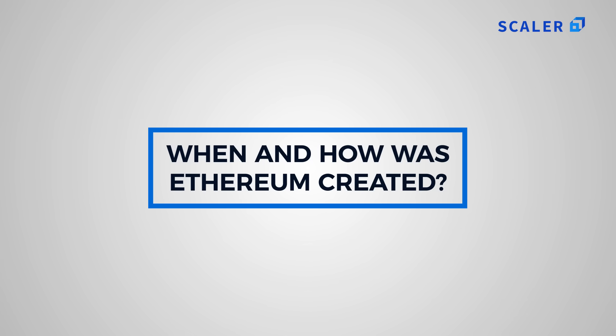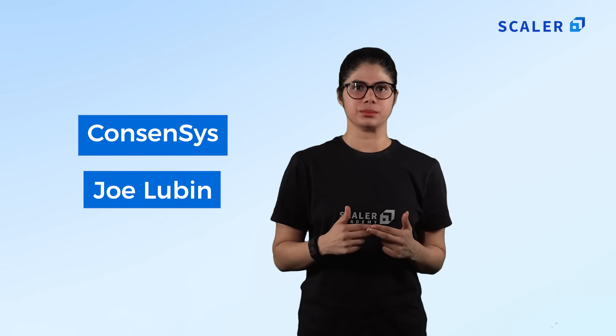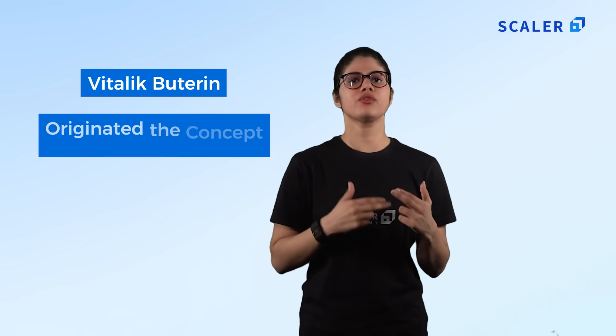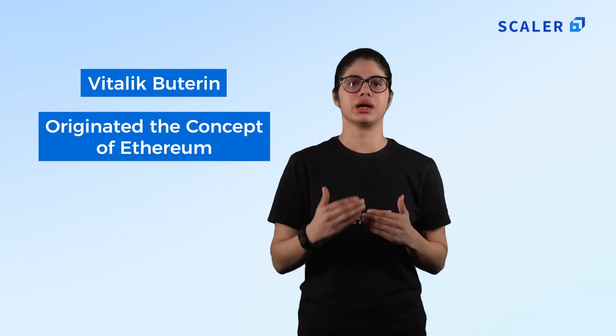When and how was Ethereum created? Ethereum was first launched in July 2015 by a group of blockchain enthusiasts. Joe Lubin, founder of ConsenSys and a blockchain applications developer, co-created Ethereum. Vitalik Buterin is the co-founder credited with originating the concept of Ethereum and is now the CEO and public face of the second most valued cryptocurrency. Born in 1994, Buterin is the youngest cryptocurrency billionaire globally. Ether was specially designed for the Ethereum platform and has been accepted as payment by many merchants and service vendors.